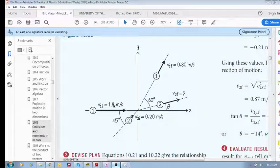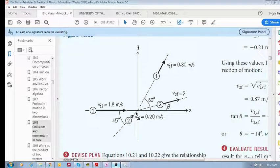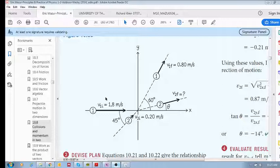Okay, so this is Example 10.7. We've got object one moving along the x-axis, and object two. Object one has an initial velocity of 1.8 meters per second, object two has 0.2 meters per second at this 45 degree angle. They collide.